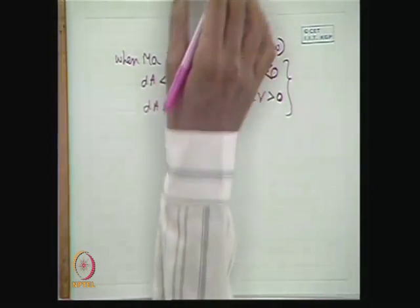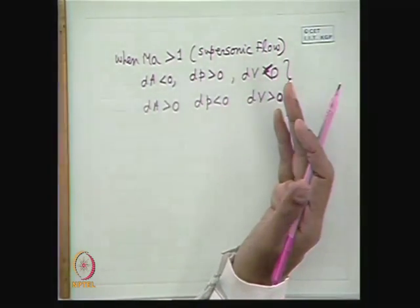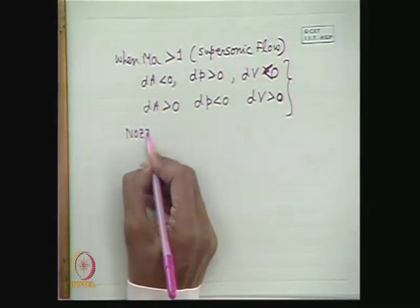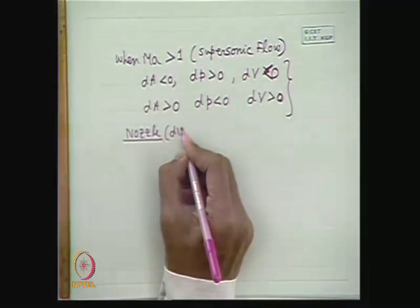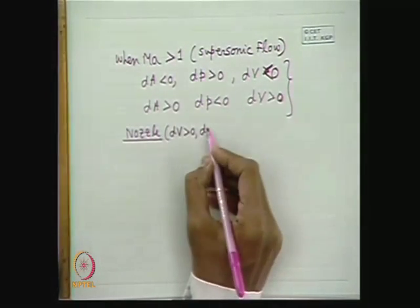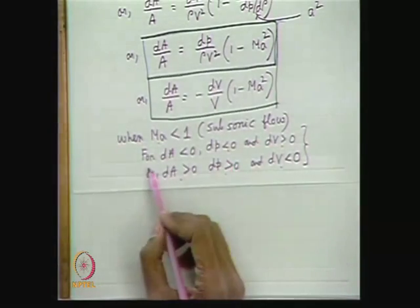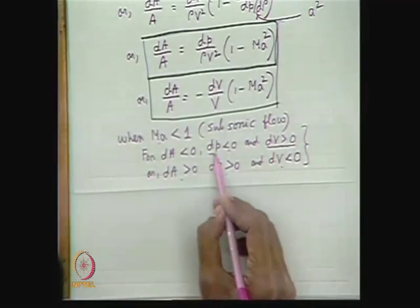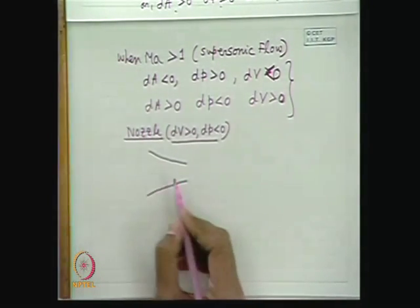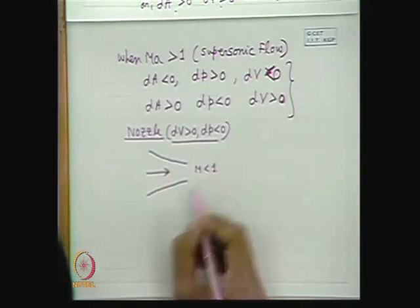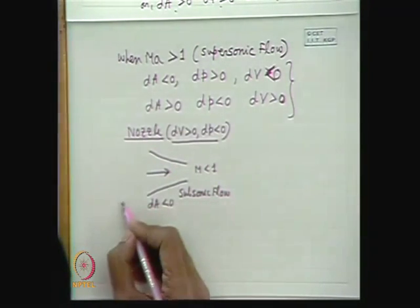We see that area variation has the reverse effect in subsonic versus supersonic flow. A nozzle is defined as a device where velocity increases (dV > 0) and pressure decreases (dP < 0). In subsonic flow (M < 1), nozzle action occurs when area decreases — so a nozzle is a convergent duct (dA < 0) for subsonic flow. But a convergent duct will not act as a nozzle for supersonic flow.